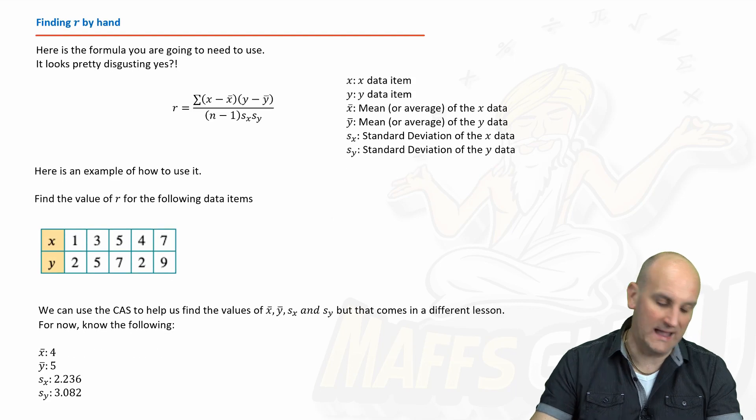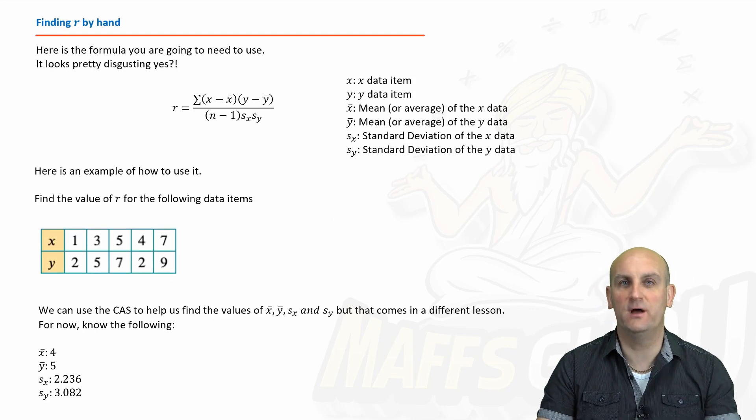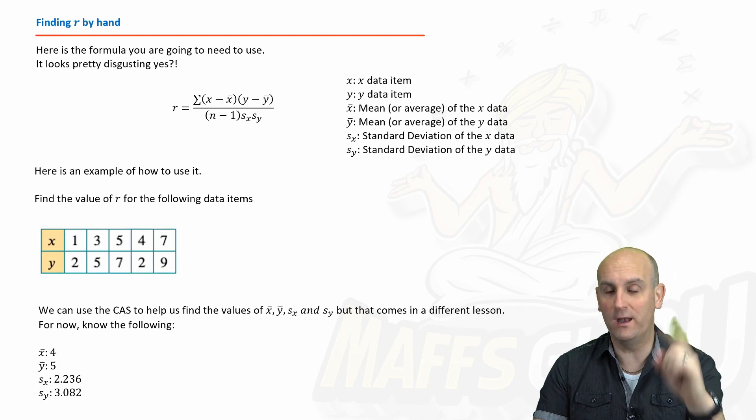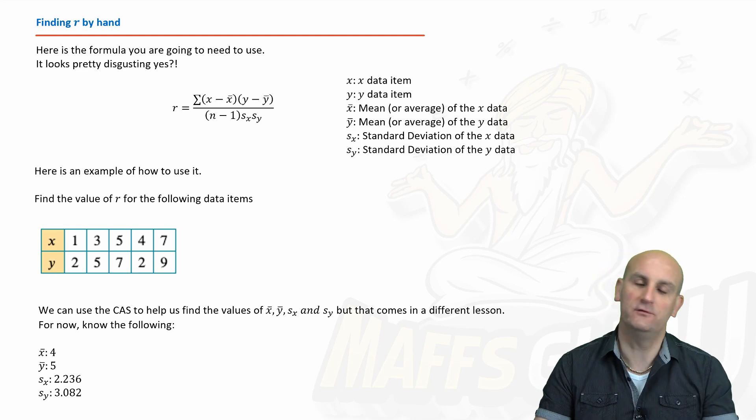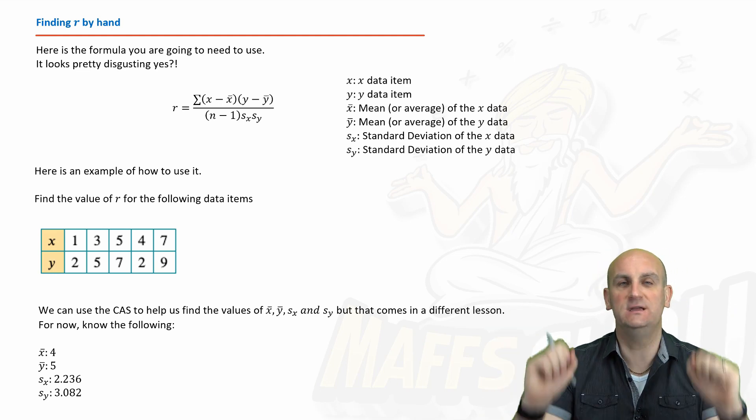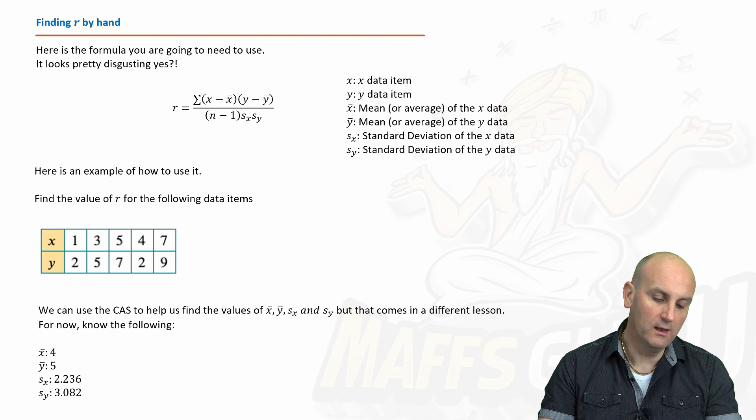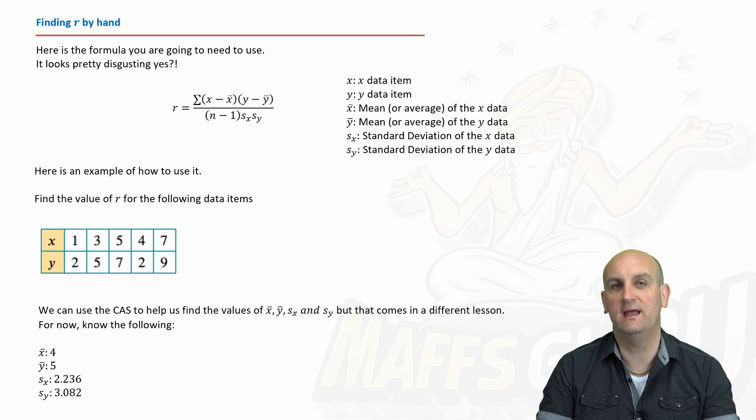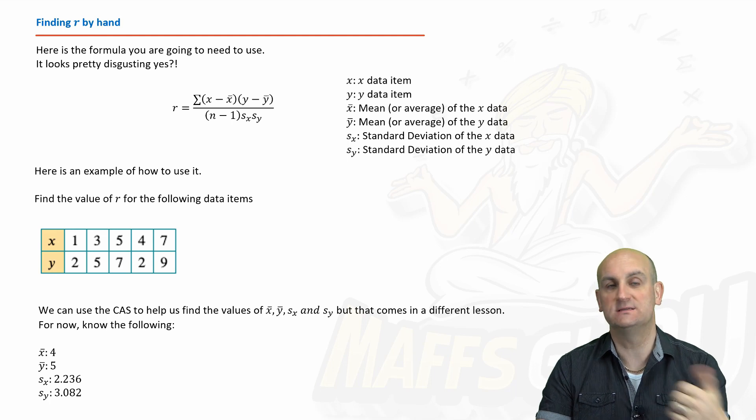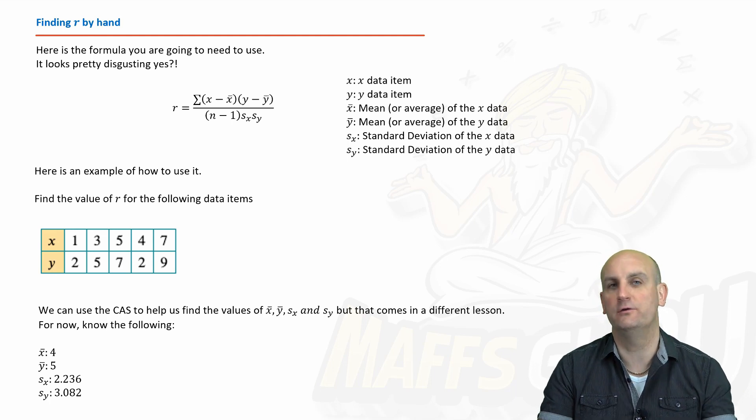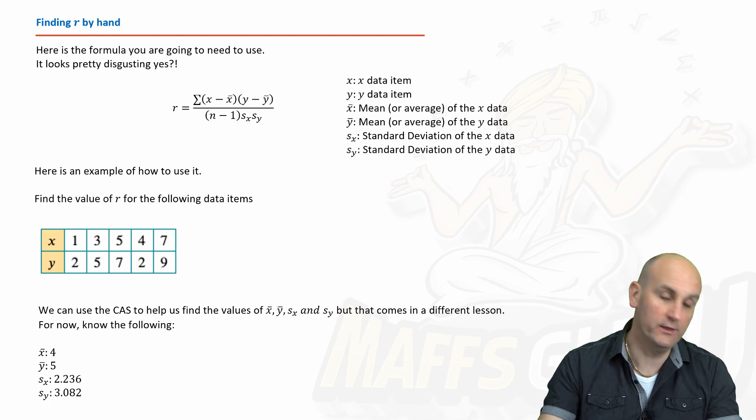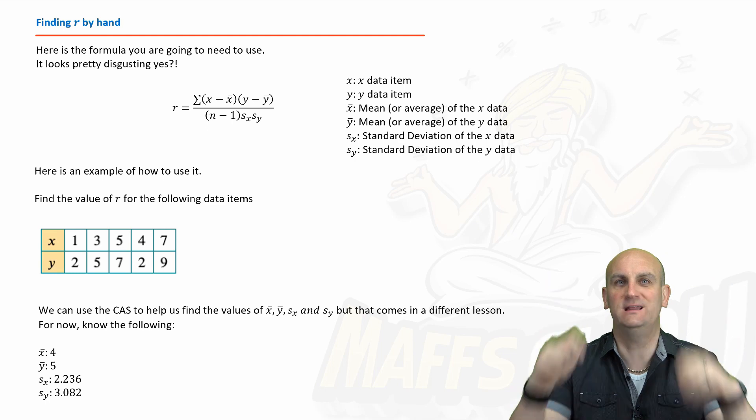But what is this value of R? How on earth are we going to find this value of R? Well, there are two ways of doing it. One, by hand, and two, using your CAS calculator. Praise be to the CAS calculator. Now, first things first, I'm going to show you how to do it by hand. Yes, it's a little bit long, it's a little bit laborious. But you never know, in a SAC or an exam, you may be asked to do some or all of the process. You do not know. And it's better to understand how to do it than just praise be the calculator.